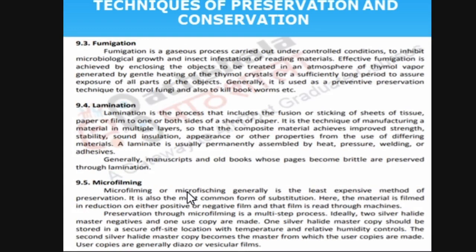Fumigation is a gaseous process under controlled conditions to inhibit microbiological growth and insect infestation of reading materials. Chemicals or gases are used to avoid insect damage in library materials. The objects to be treated are enclosed in an atmosphere of thymol vapor by generally heating thymol crystals for a longer period to ensure exposure of all parts. It uses preventive measures to control fungi — a little bit of heat is transferred to the book to kill the fungi. This is called fumigation.